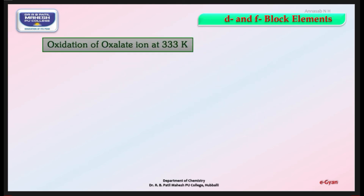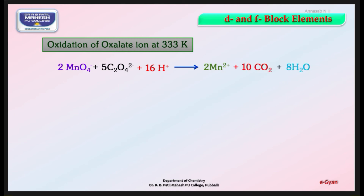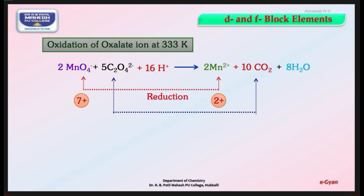Oxidation of oxalate ion (C2O4²⁻) at 333 K: MnO4⁻ reacts with 5C2O4²⁻ (oxalate ion, obtained from oxalic acid H2C2O4) with 16H⁺ to give 2Mn²⁺ + 10CO2 + 8H2O. Change in oxidation number of Mn from +7 to +2 is reduction; change in oxidation number of carbon from +3 to +4 is oxidation.